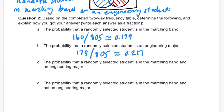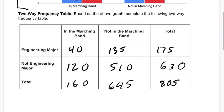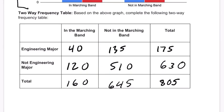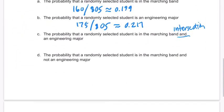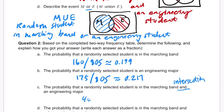The probability that a randomly selected student is in the marching band and an engineering major — this is the intersection. They're in marching band and also an engineering major, so we look at the cell where those intersect: that's 40. A randomly selected student means out of the total, so it's 40 out of 805, which is about 0.05.